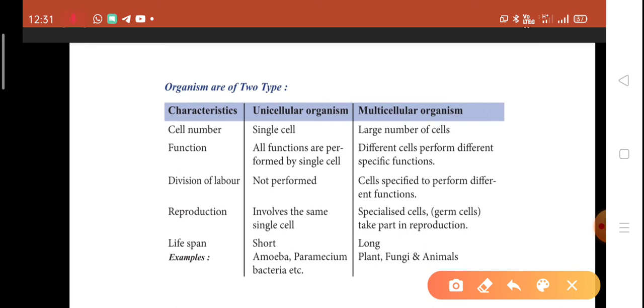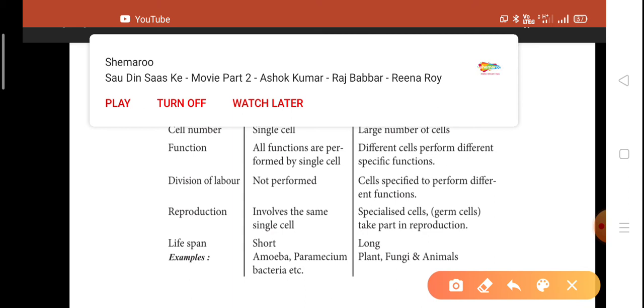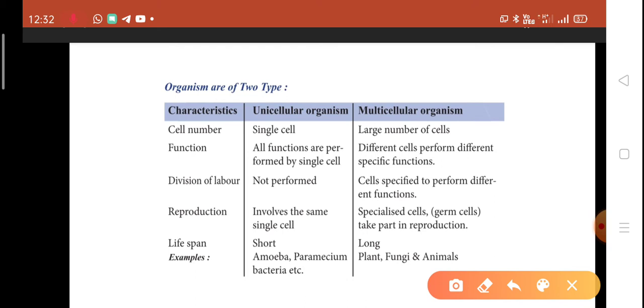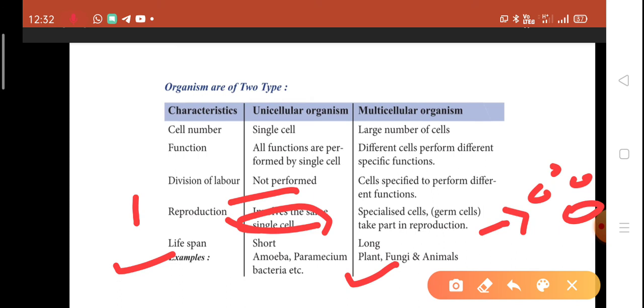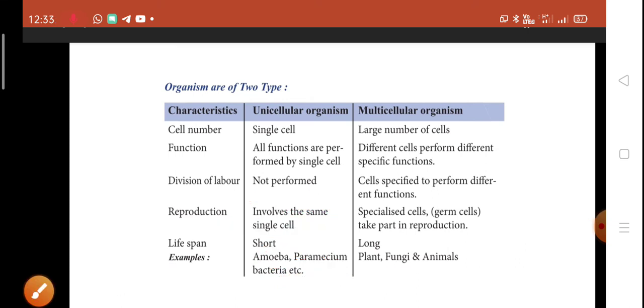Function: in unicellular organisms, all functions are performed by a single cell, like amoeba—capturing food, digesting food, respiration, excretion, growth, all done by one cell. In multicellular organisms, specialized groups of cells perform different functions. Reproduction involves the same single cell in unicellular, but different types of cells take part in reproduction in multicellular. Lifespan is short in unicellular but long in multicellular organisms like plants and animals.